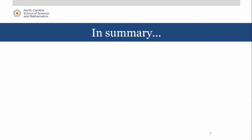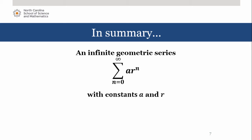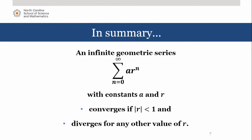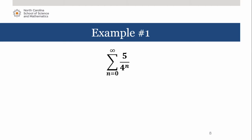To summarize, an infinite geometric series converges if the absolute value of r is less than 1, and diverges for any other value of r. Let's work through a couple of problems to apply our conclusion.